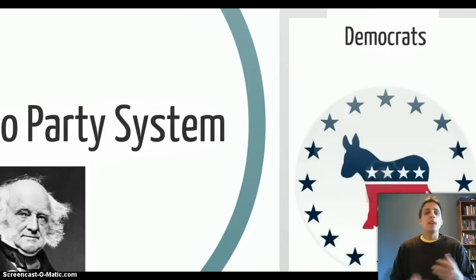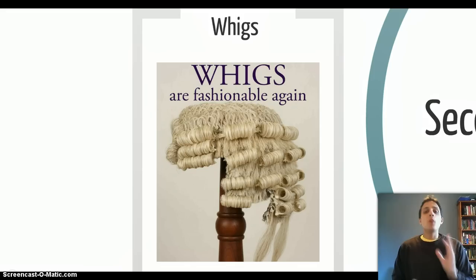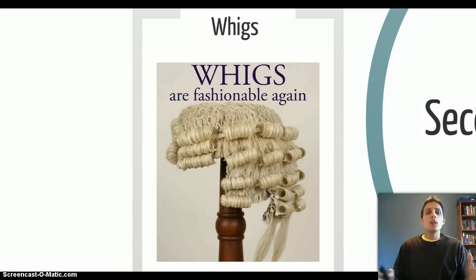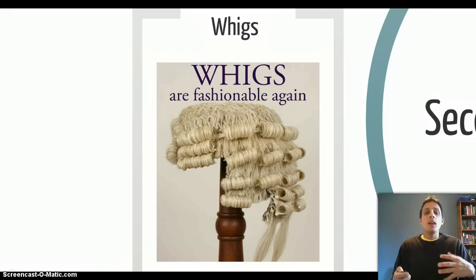It's called the second two-party system because the first two-party system — the Federalists and the Democratic Republicans — disintegrated about 1816. So this is the second example of the two-party system in American politics. What starts to happen in the late 1840s and into the 1850s is that this two-party system starts to disintegrate also.